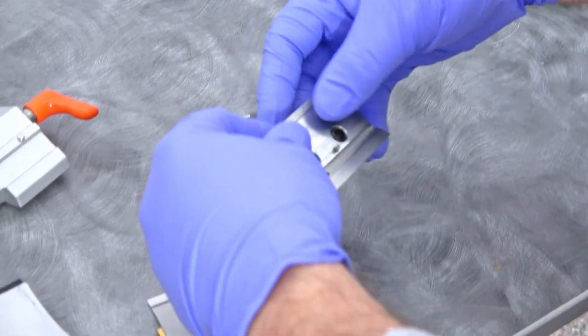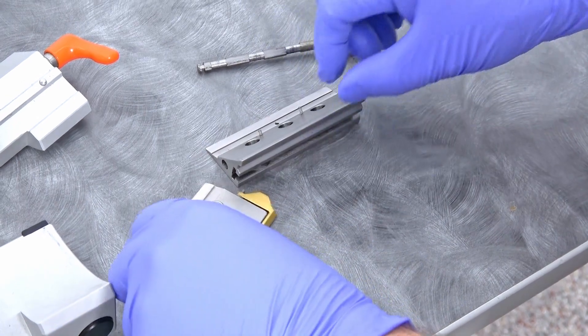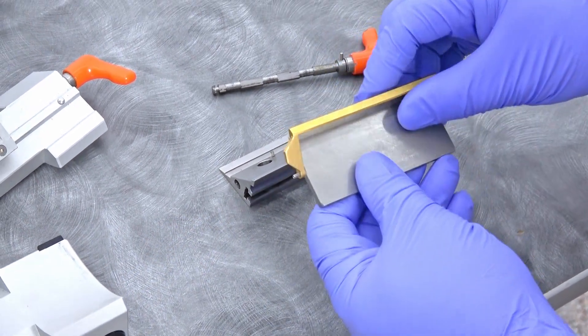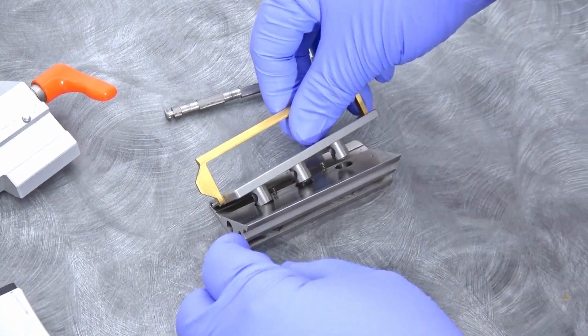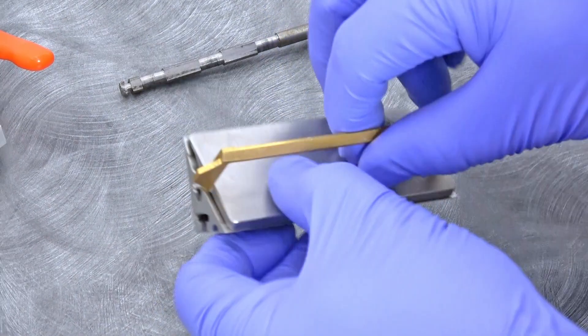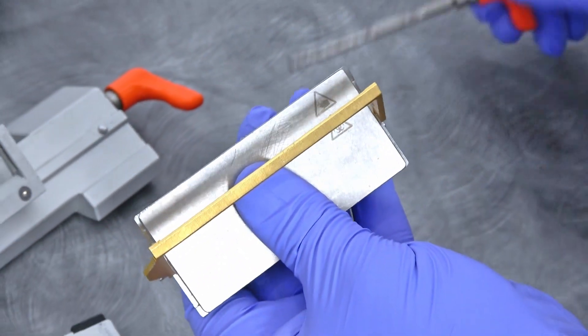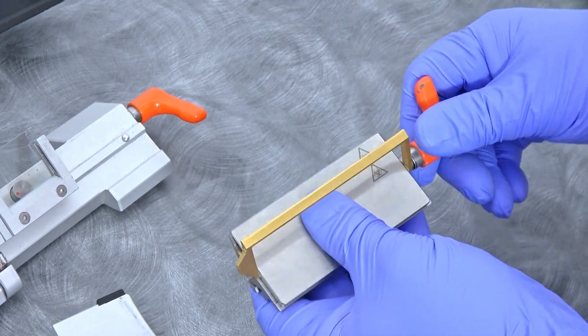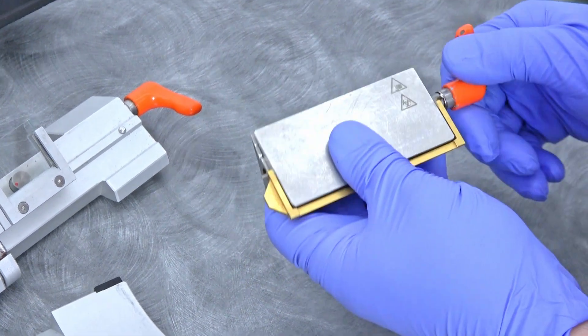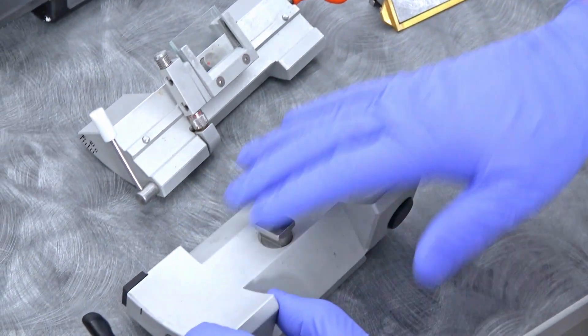We're going to start putting this back together again. It goes pretty much right back the way we took it apart. You can just put that right back in there. Then you've got to hold it down, hold the spring shut so you can just push your pin back in. That just wedges that again.